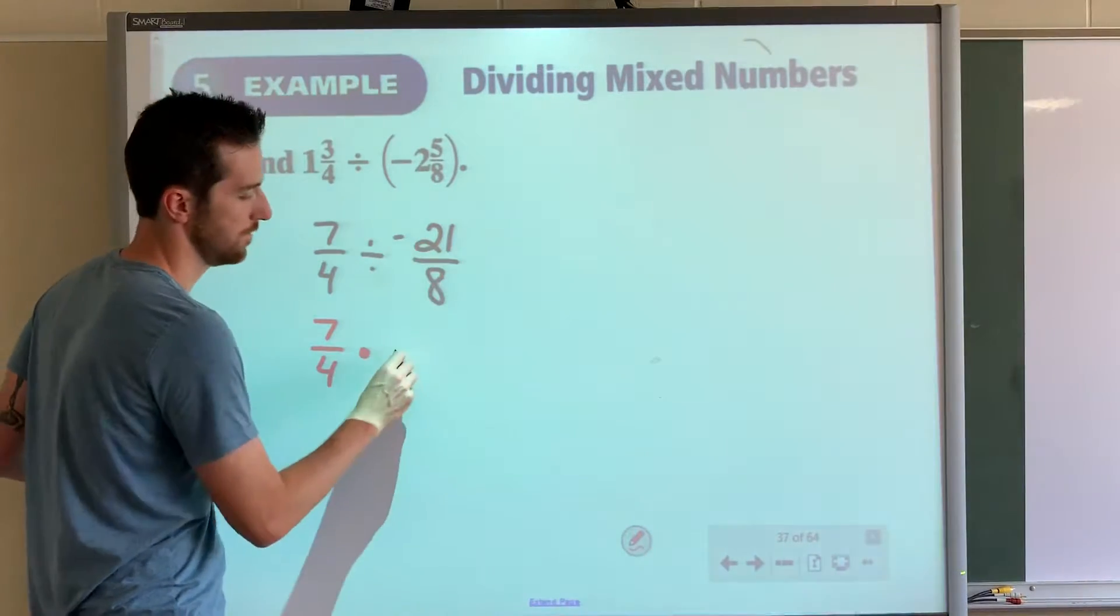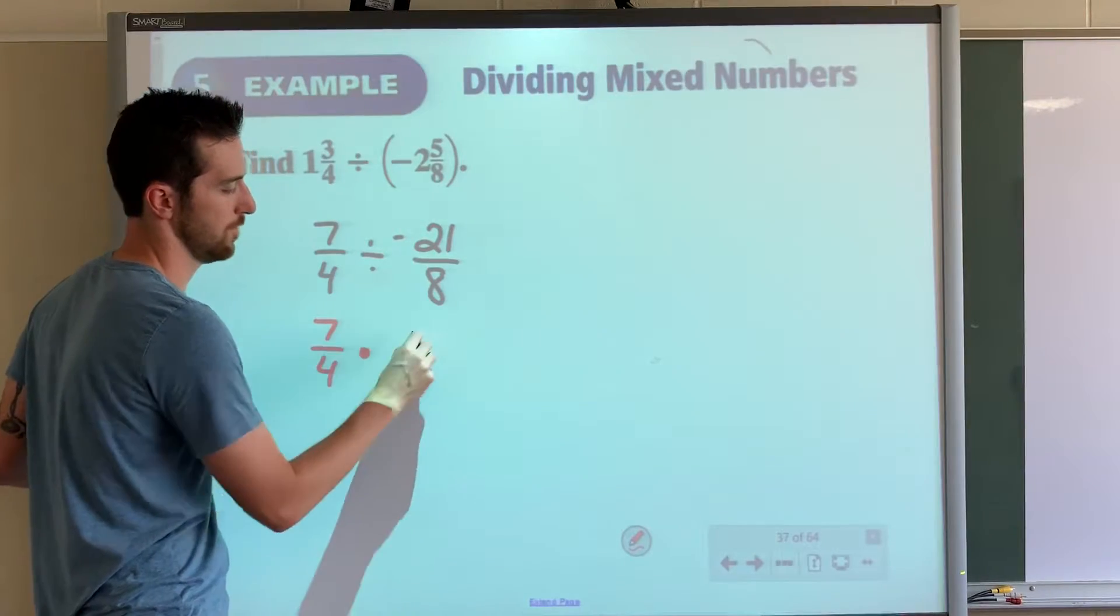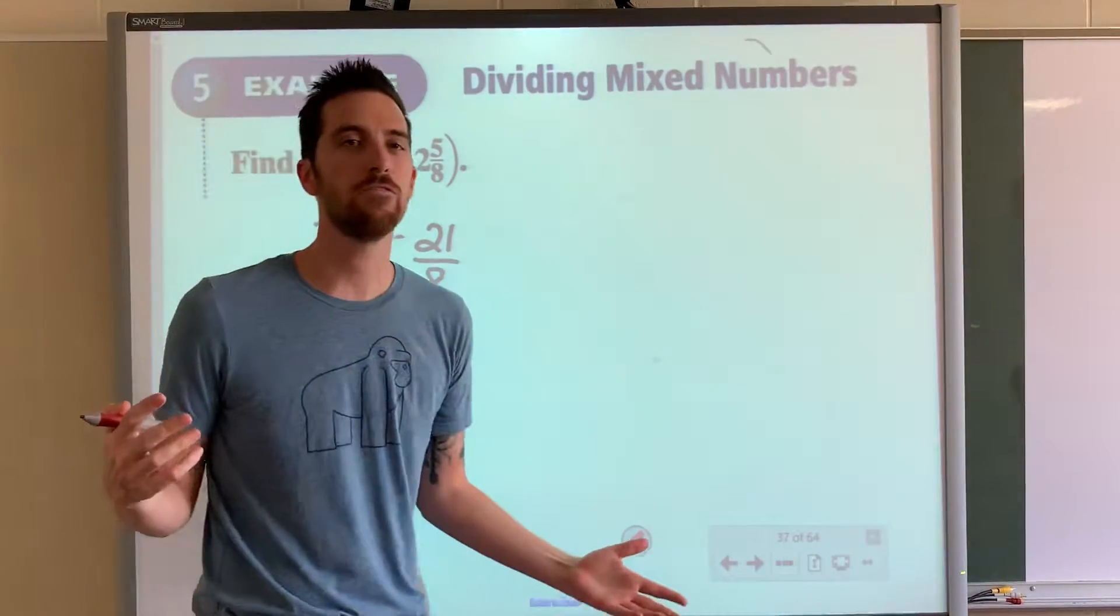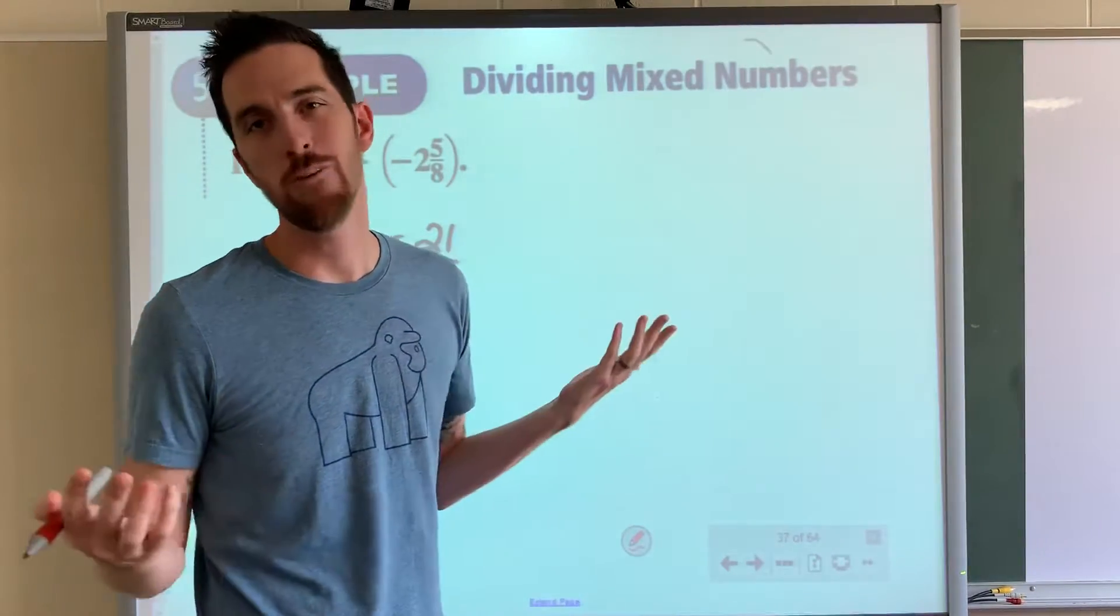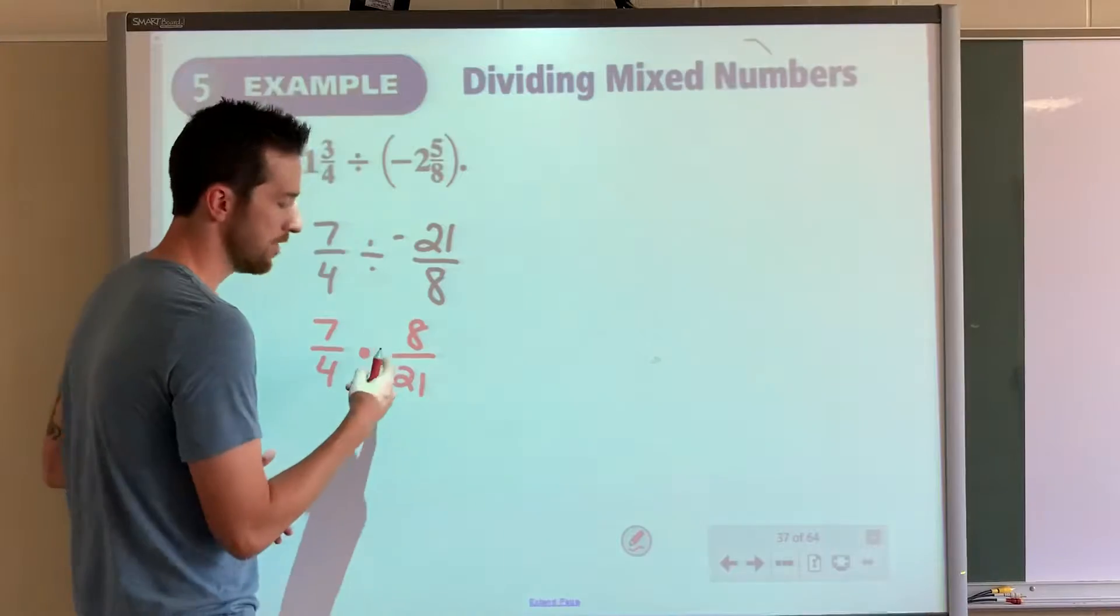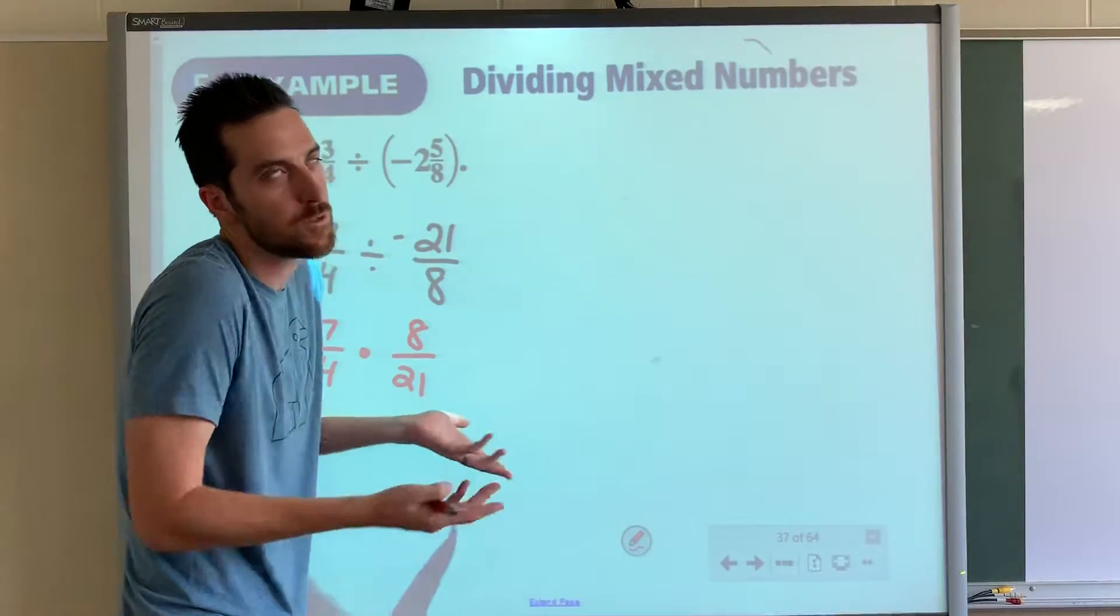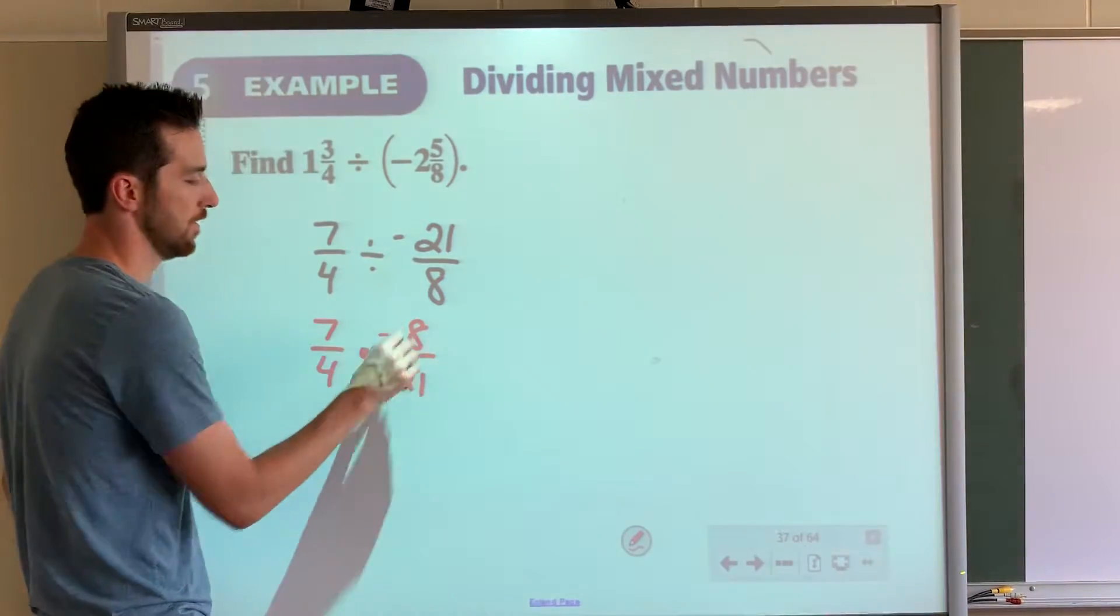However, look: 21's going down here, 8's going up here. You can keep the negative with the 21. It's just proper form to keep the negative in the numerator, typically. You can have it out in the middle, you can have it with the 21, but I'm just going to keep it in the numerator.